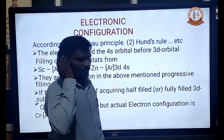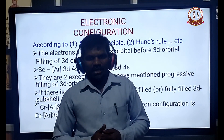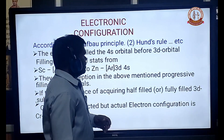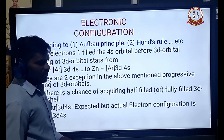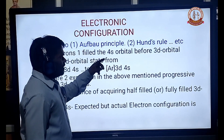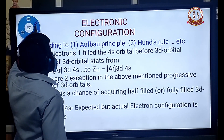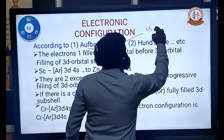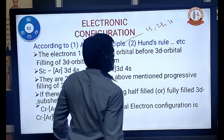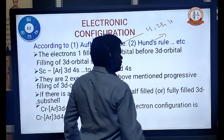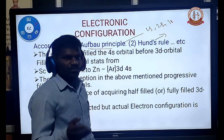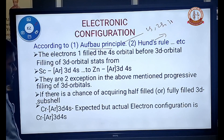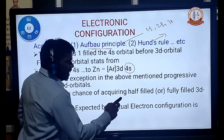Next, the electronic configuration of D-block elements. Electronic configuration refers to the distribution of electrons in atomic or molecular orbitals. To write the electronic configuration of transition elements, we use two basic rules: the Aufbau principle and Hund's rule. The Aufbau principle states that electrons fill orbitals in order of increasing energy level — 1s, 2s, 3s, 4s, and so on. Hund's rule states that electrons singly occupy orbitals before pairing. For 3D series elements, the 4s orbital is filled before the 3d orbital.